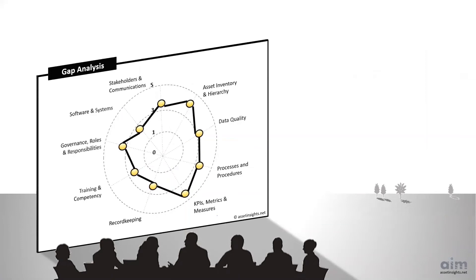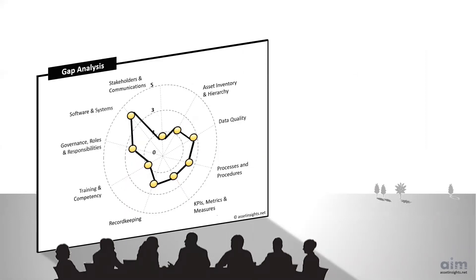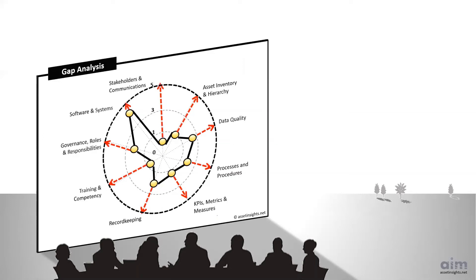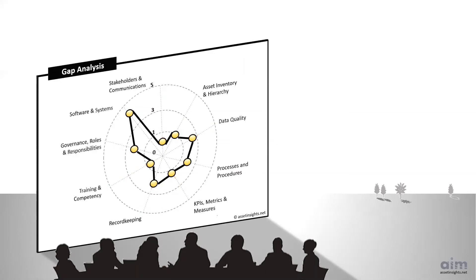The shape of the profile may vary by department, or the shape may vary at different points in time. The size of each gap is estimated based on the variance between the current score relative to the organization's target score. This collection of gaps reveals the overall gap profile.